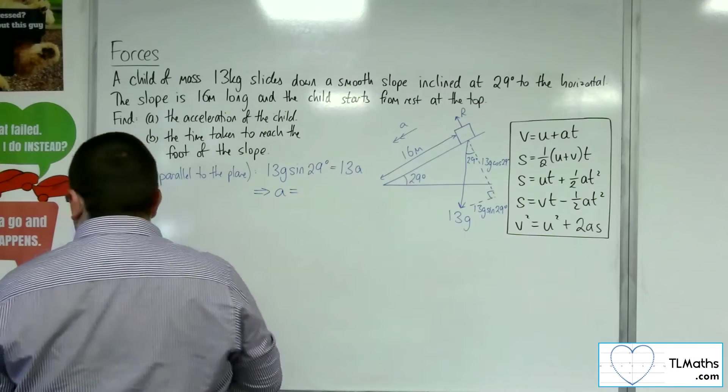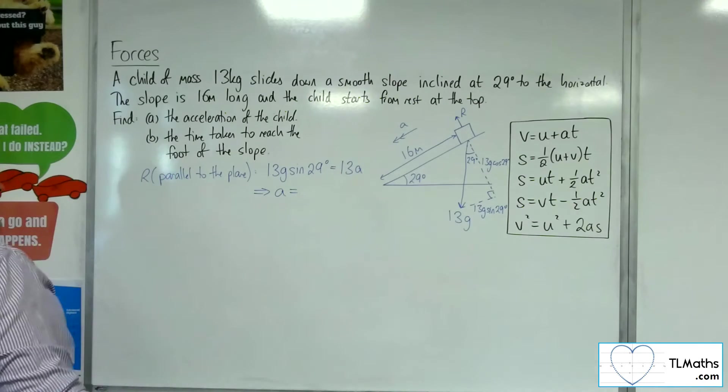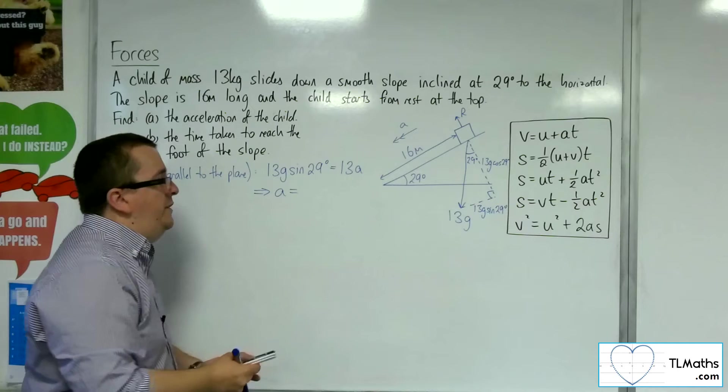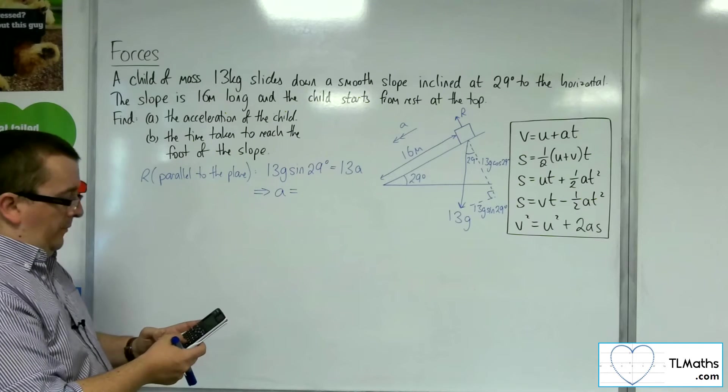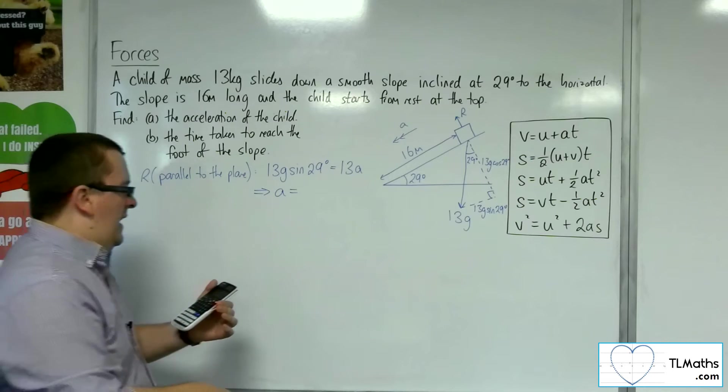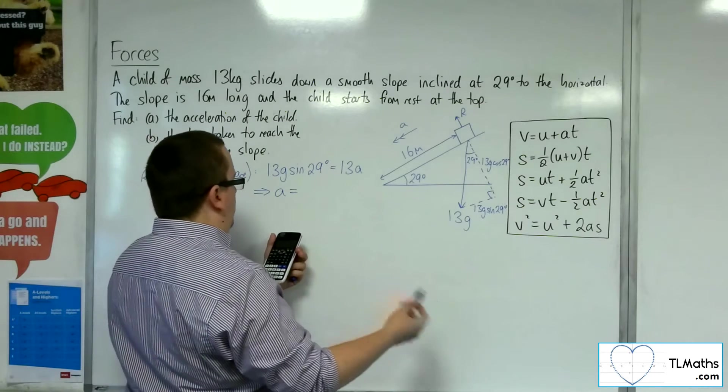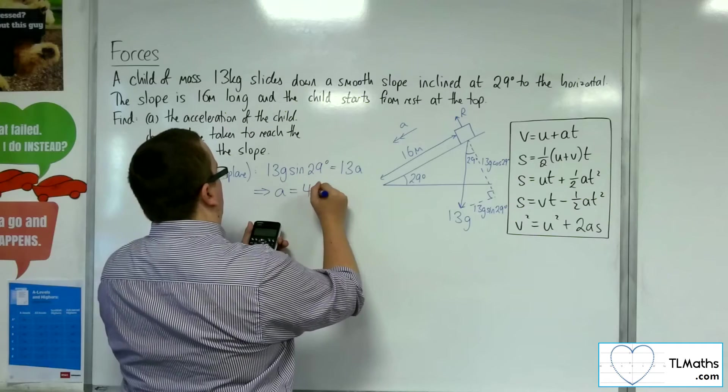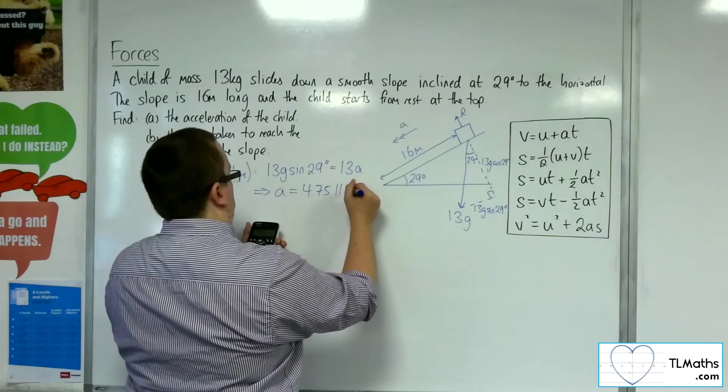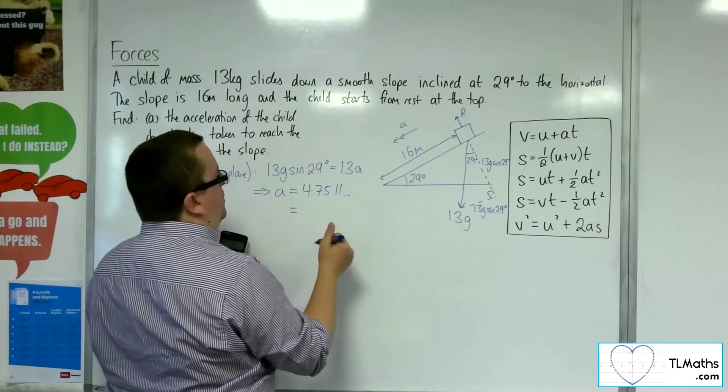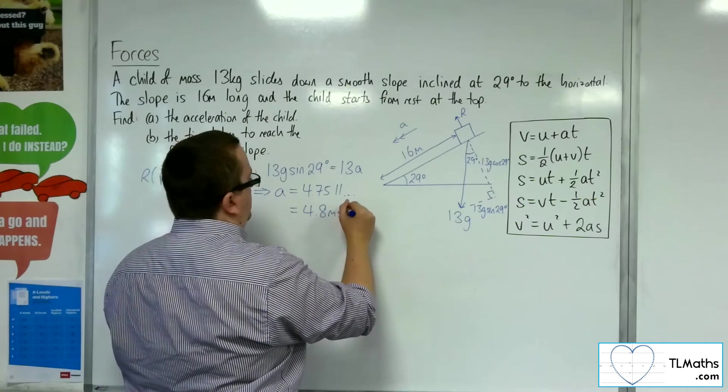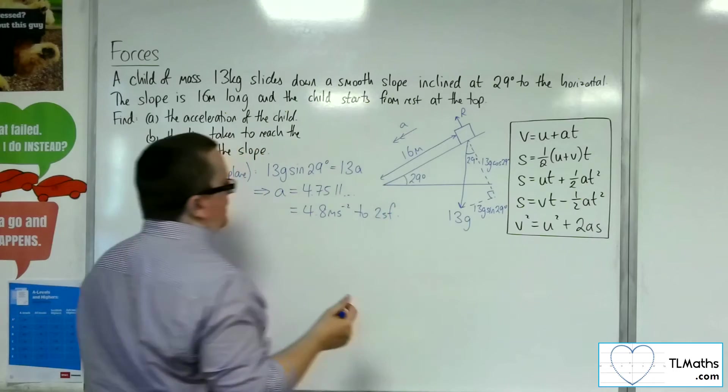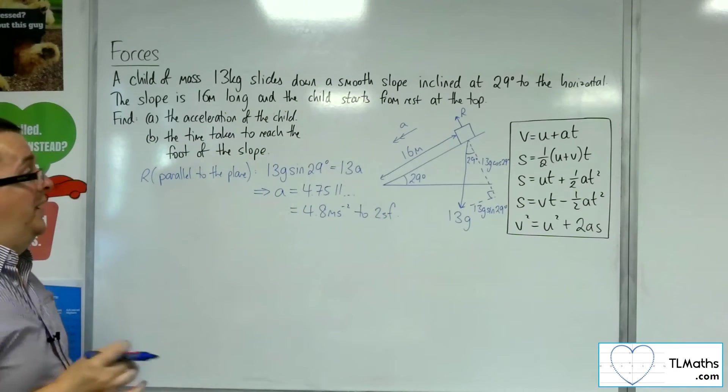So what I can do is divide both sides by the 13. So the acceleration will just be g times sine of 29. So that's 9.8 times sine of 29 degrees, and that gets me 4.7511, etc. So to two significant figures is 4.8. So that's my acceleration.